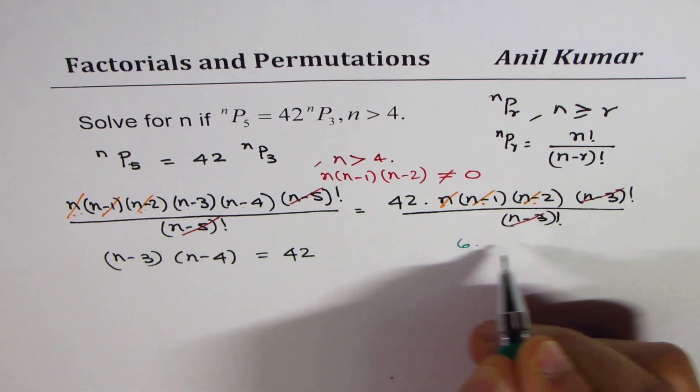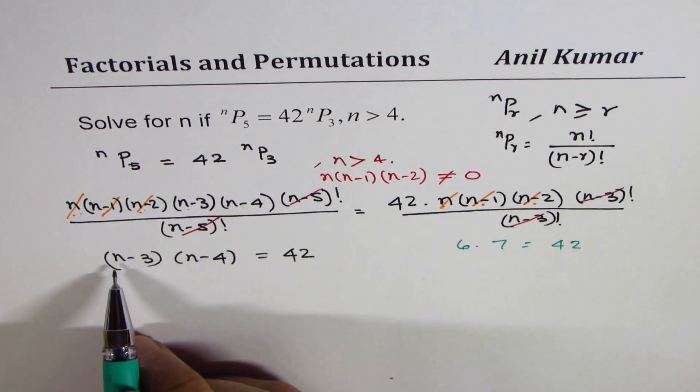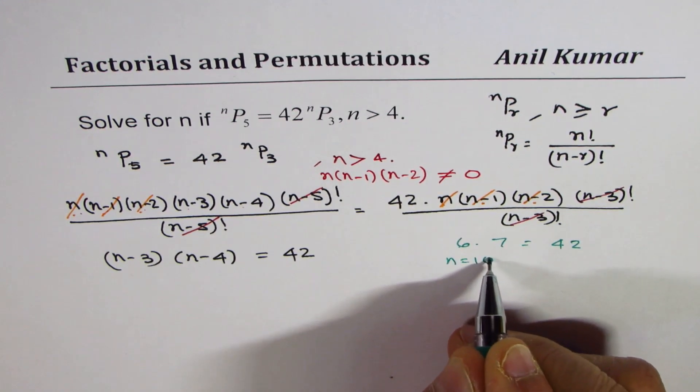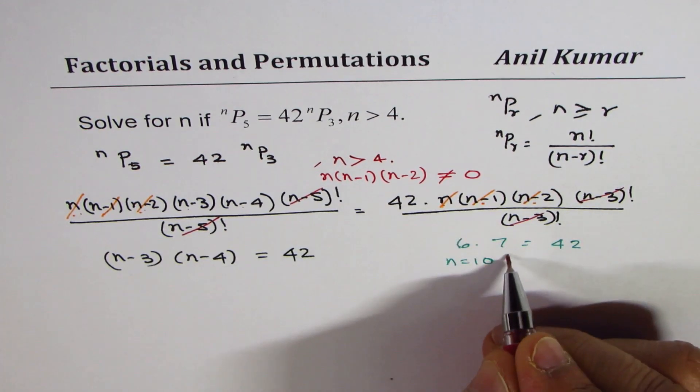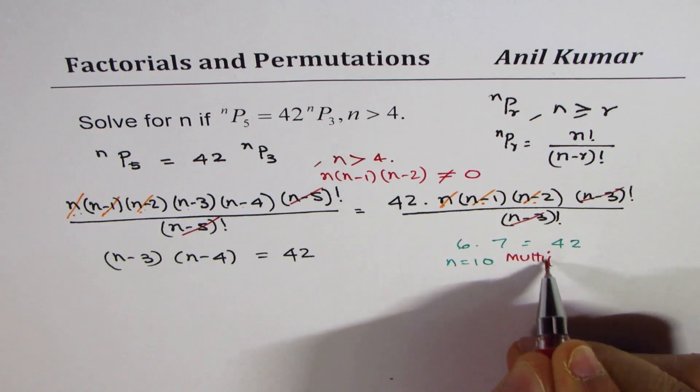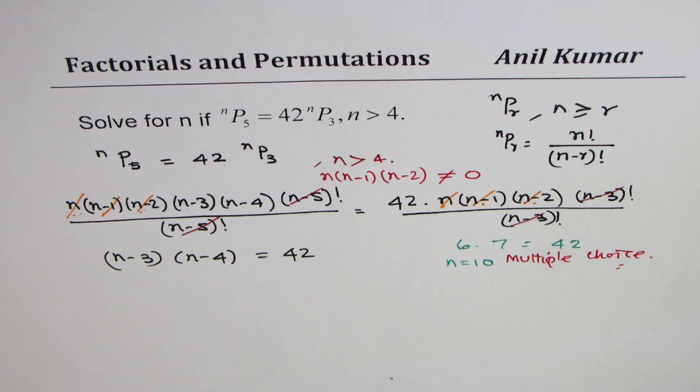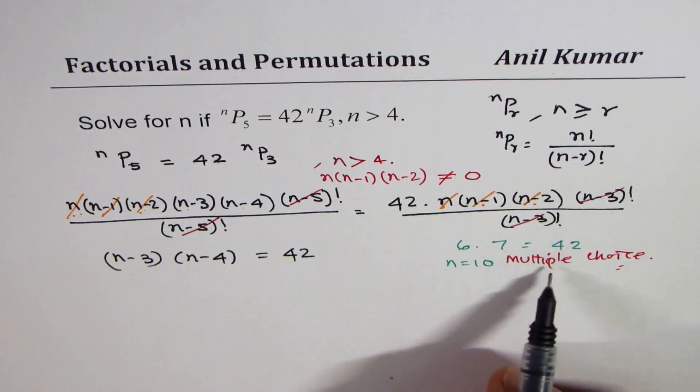6 times 7 is 42. That means n could be what? We could get 6 and 7 for n equals 10. So at times, at this stage, you can estimate the answer. Now, it is a good idea to estimate this answer if it is a multiple choice question. So many times these days you have only multiple choice questions. I will not like you to go further, but estimate and get the answer.